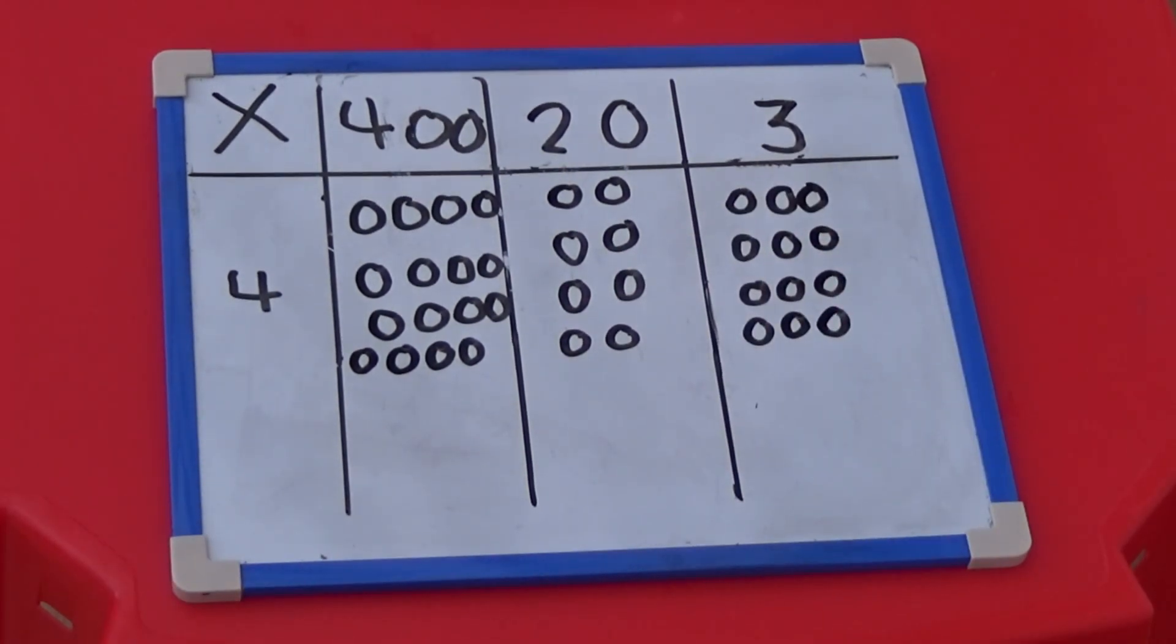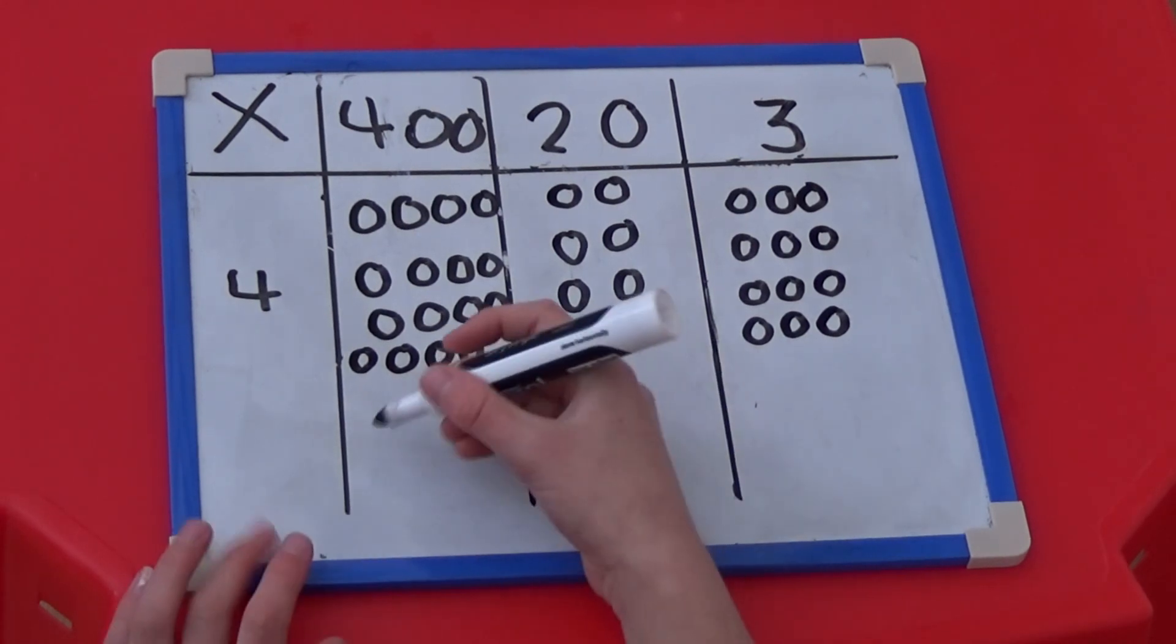Again, we can see that 400 multiplied by 4 is 1,600.